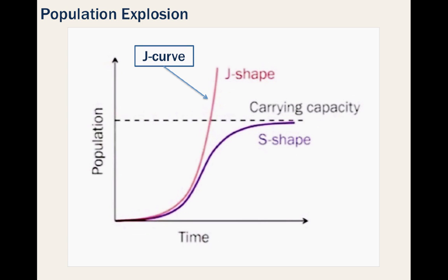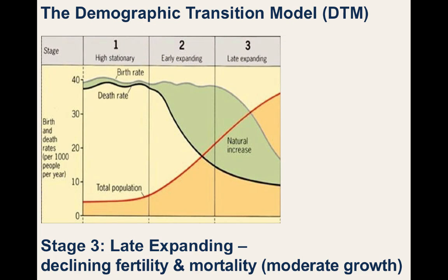As the 20th century proceeded, the birth rates in Great Britain declined, as well as in other places where industrialization took hold. This enabled Britain to enter Stage 3 of the DTM, known as the Late Expanding Stage. Declining birth rates with already lower death rates led to population growth, but at a more moderate pace.